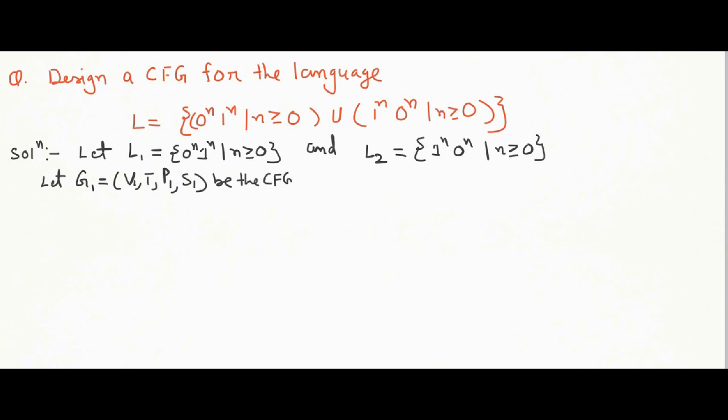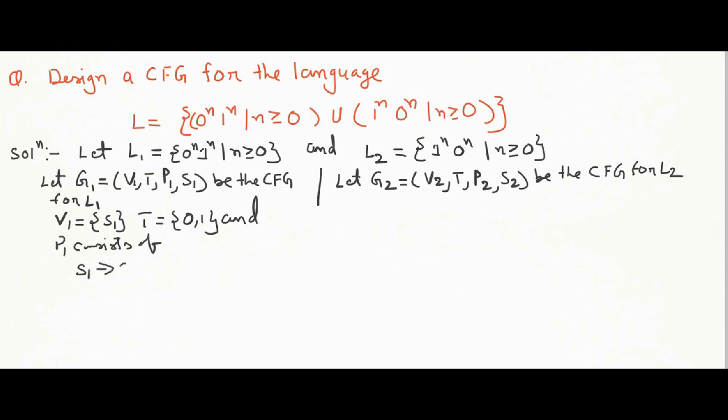So L1 and L2 corresponding to L1, we are going to have G1. And corresponding to L2, we are going to have G2. So G1 having variables, terminal and productions as such. And G2 having productions as given by P2.